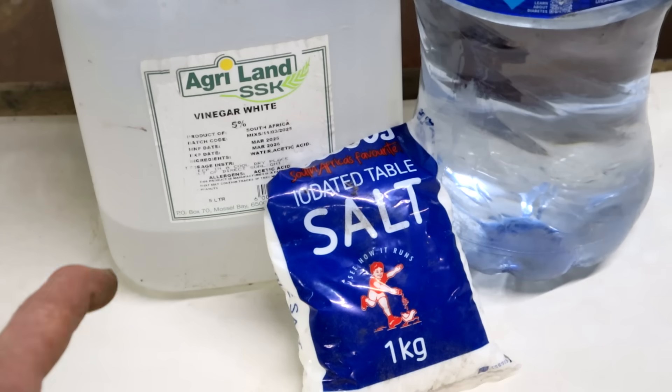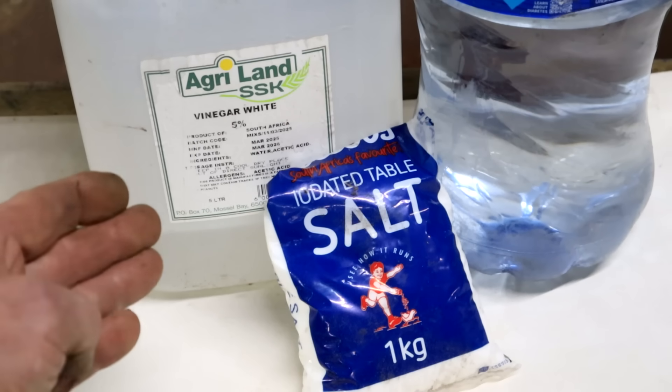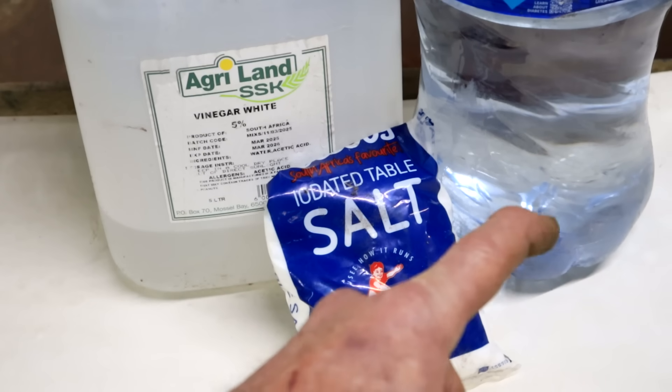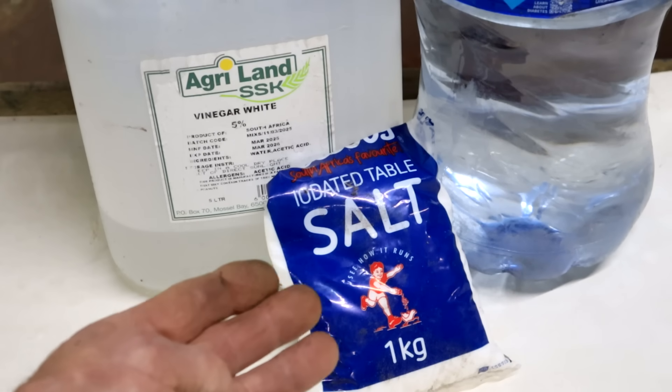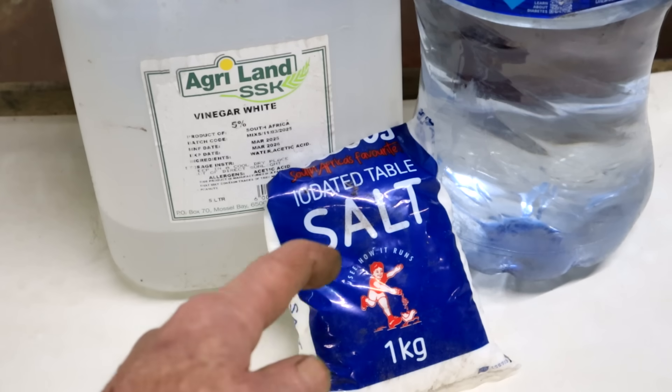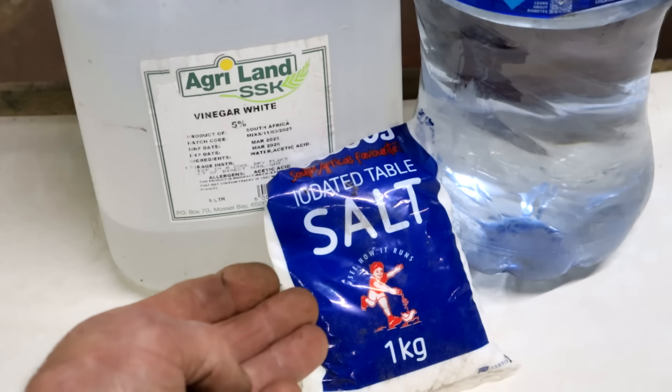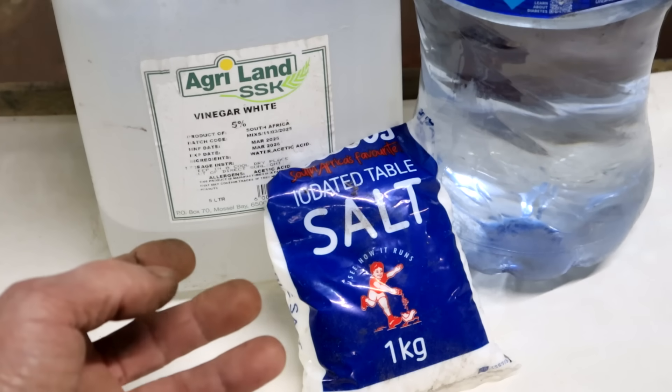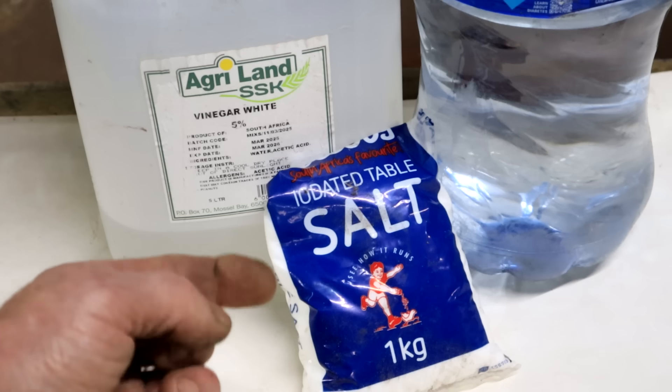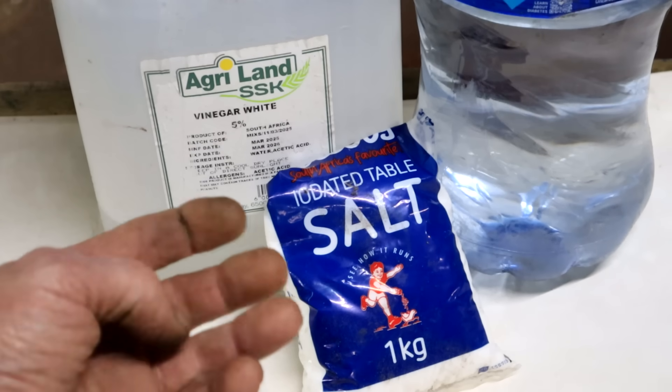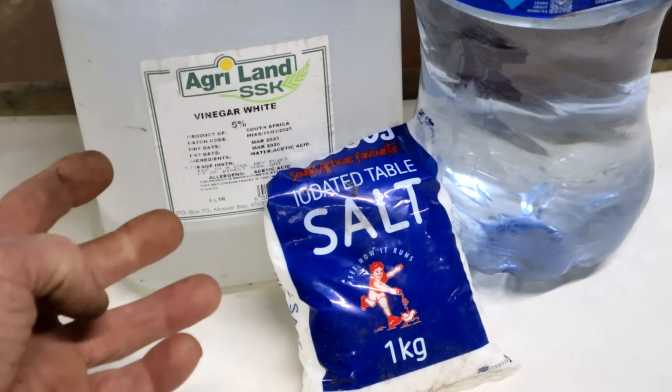My plating solution recipe is three parts common household white vinegar, one part distilled water and a handful of common household salt. It's not critical. The idea of the salt is simply to increase the conductivity of the solution. If you want a figure, I would say around 150 grams of salt to around 5 liters of the liquids.